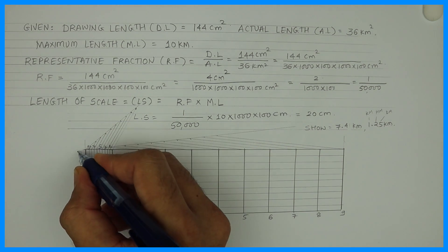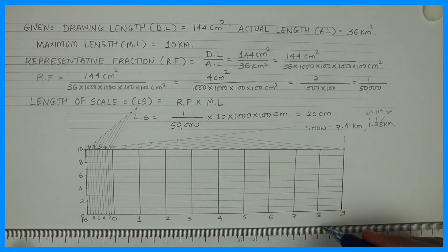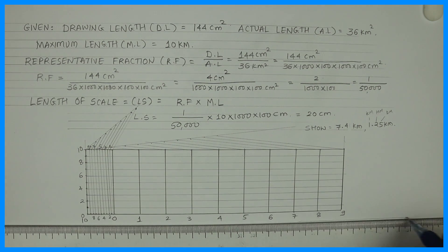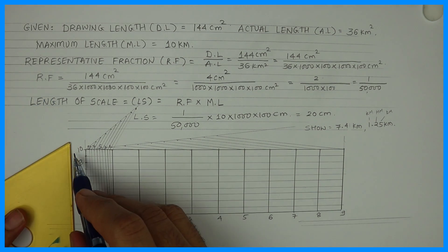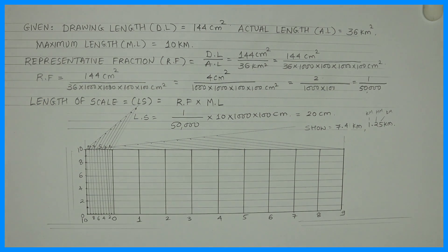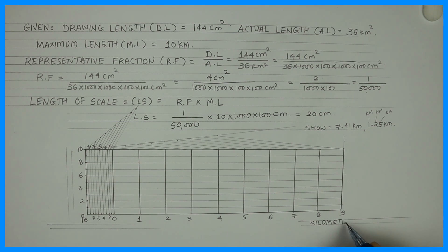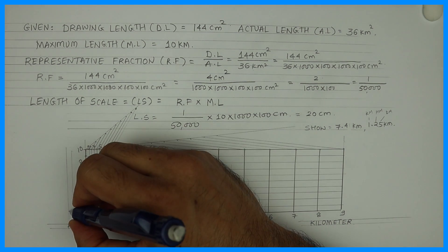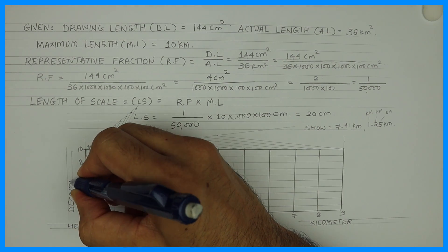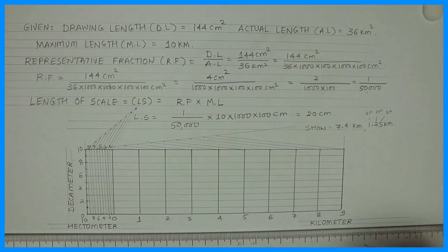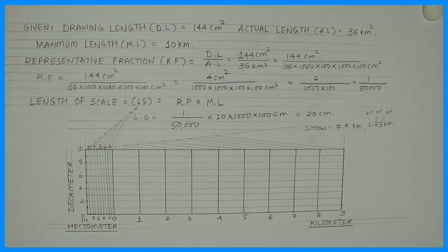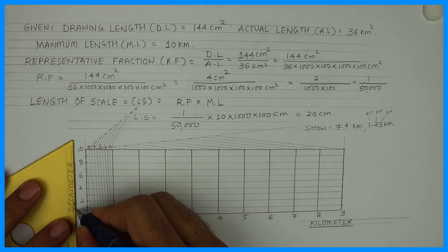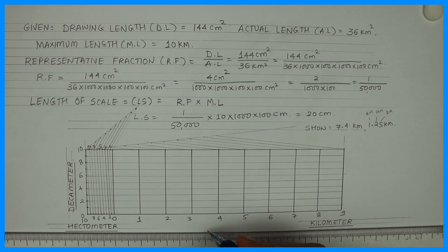Label the main scale markings: 0, 2, 4, 6, 8, and 10. This main axis is kilometer. The subdivided first block is hectometer. And the diagonal gives decameter. You can write the RF value here on the scale.